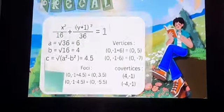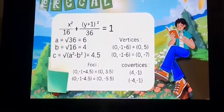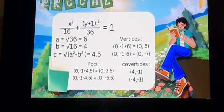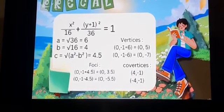The equation given to me is x squared over 16 plus quantity of y plus 1 squared over 36 equals 1.